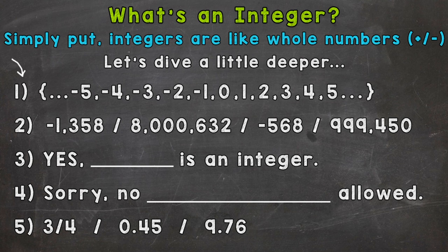Number one here, we have examples of integers. Let's start in the middle at zero, and if we go to the right we're just counting up by one each time, so we have our positive integers.